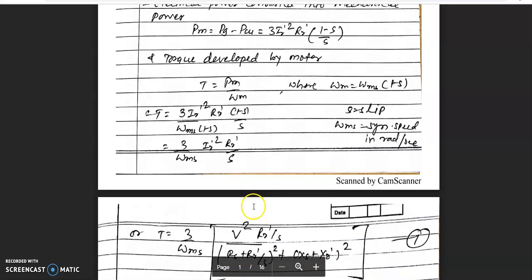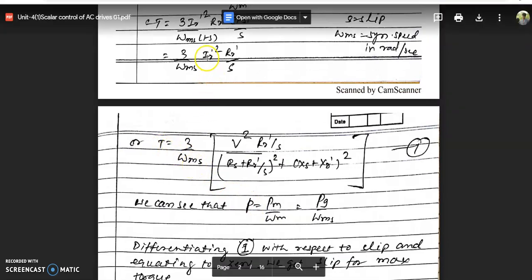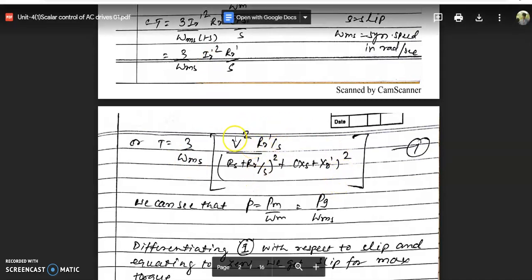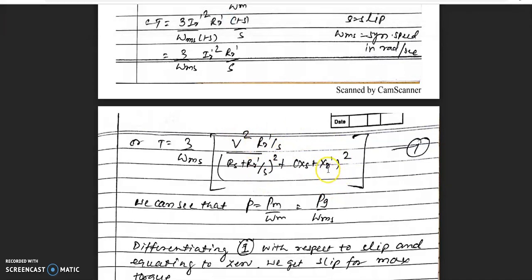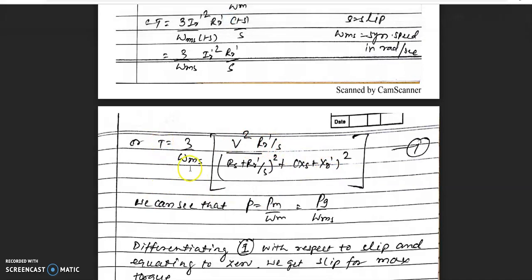Torque in general is given by this equation. We replace the rotor current by its expression with voltage and resistance. These are the values already available to you.